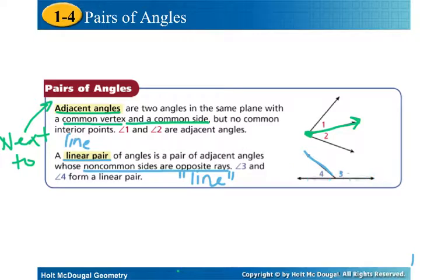What I would do is draw the image, most definitely, and then name that it's a linear pair, and it comes from the word line. Their non-common sides are opposite rays. I'm going to go ahead and circle that. These are the non-common sides.